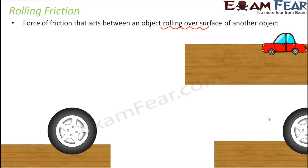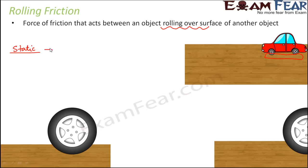Let me compare the three types of friction. In the case of static friction, the object is at rest. When the object is at rest, the interlocking is maximum because the surface of the wheel and the surface of the floor which are in contact are absolutely in touch with each other. So interlocking is maximum and therefore friction is also maximum.